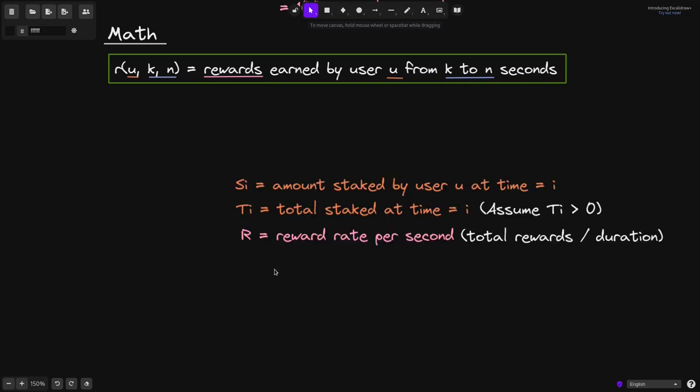Next, I'll define some variables. I'll say s sub i is equal to the amount staked by user u at time equals i. T of i is the total staked at time equals i.